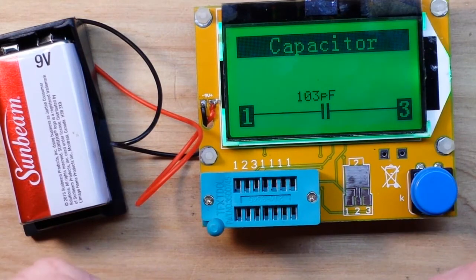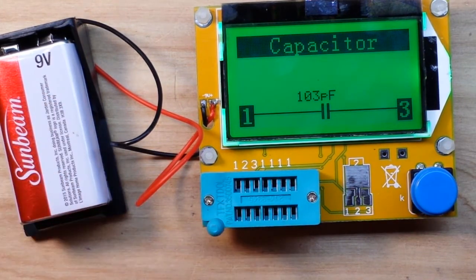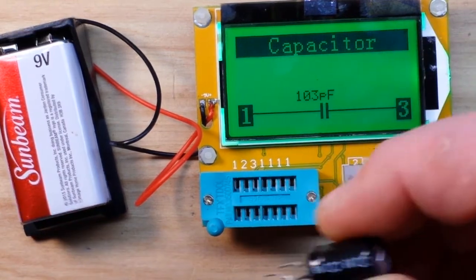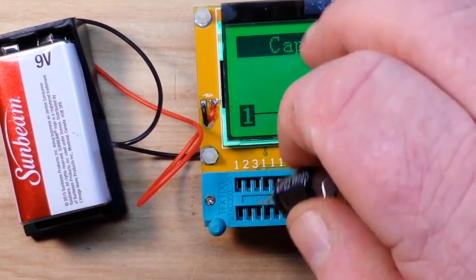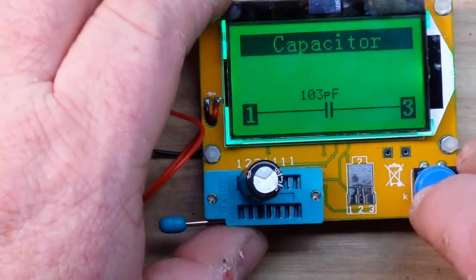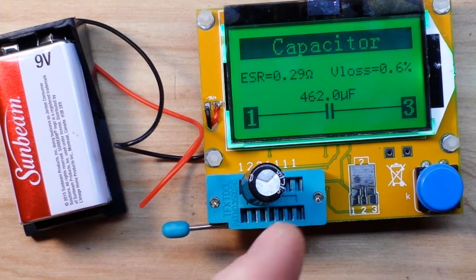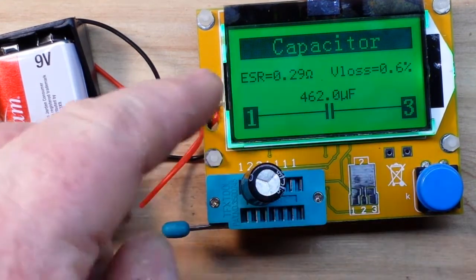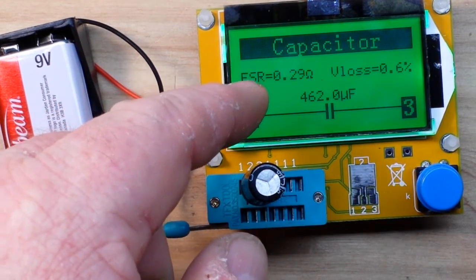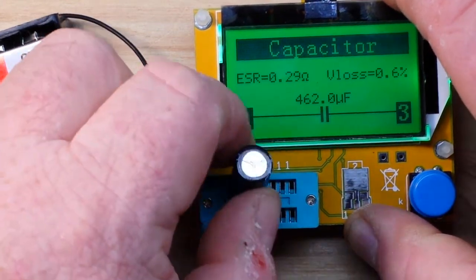Very nice Monty Python, very nice. Here's a 470 microfarad electrolytic. Should always discharge them before you try and test them. And round and round she goes, where she stops nobody knows. What do we got? 462 microfarads with an equivalent series resistance of 0.29 ohm and a V loss of 0.6%. Very nice.